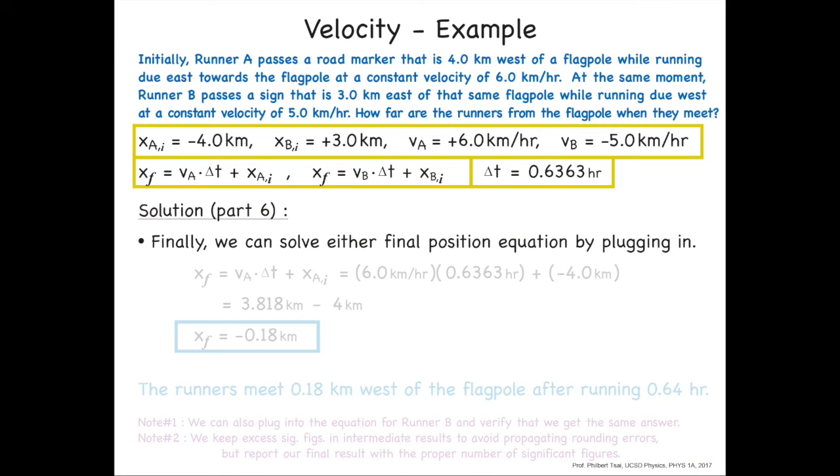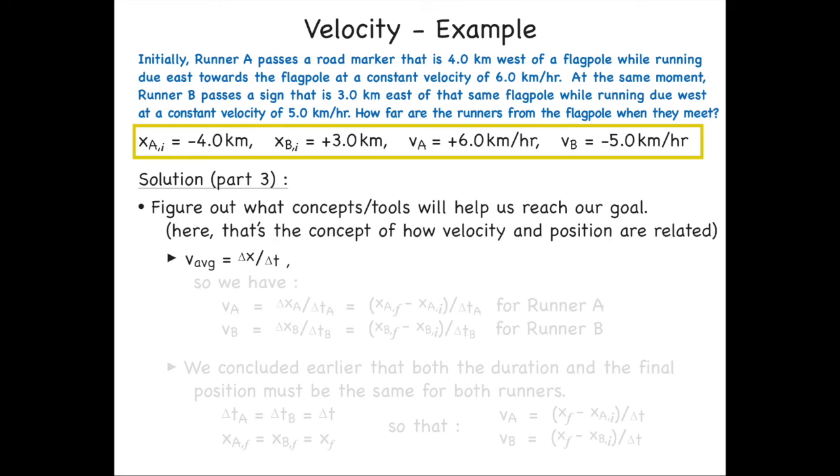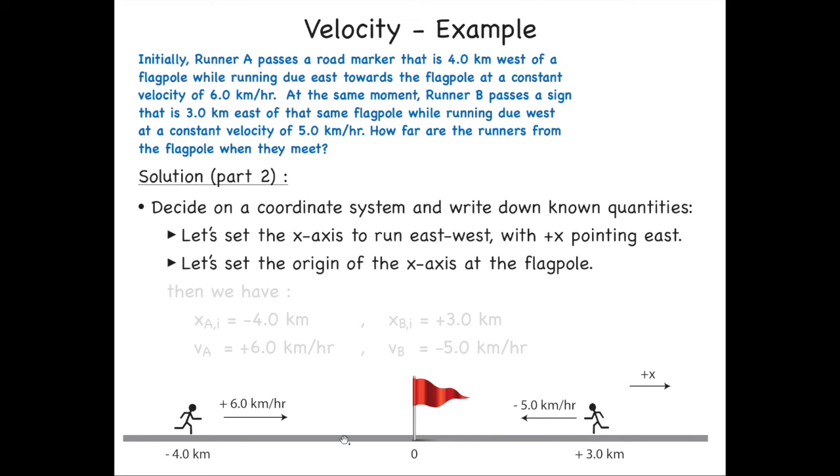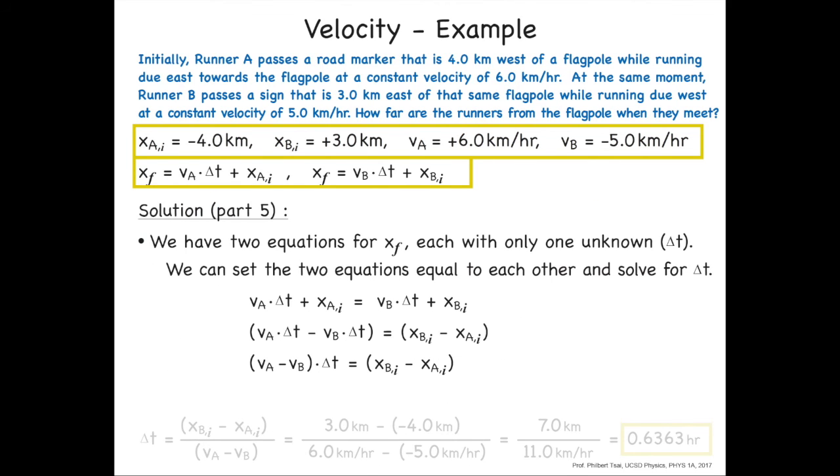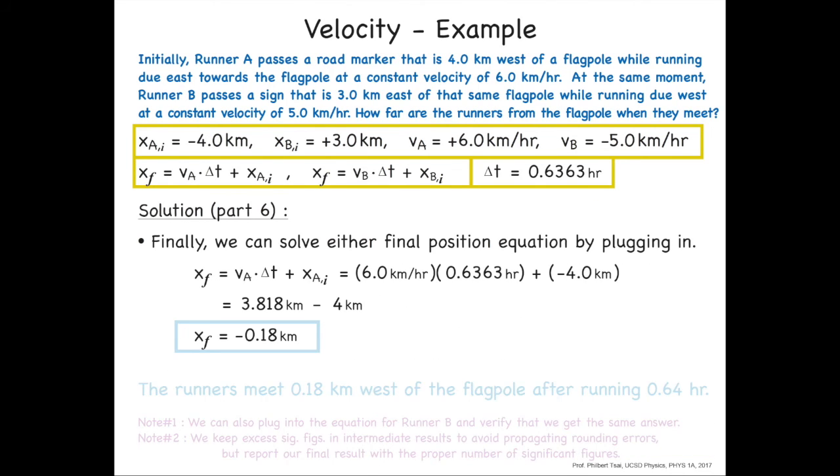Now we know how long they're running for before they meet. And we said if we know the time, we had an equation where this was known, this was known, we just needed this. We've just solved for that. So for either one of these runners, we plug in, we choose runner A. The velocity of runner A times the time we just solved for plus their initial position gives us 3.818 minus 4, which puts our final position at minus 0.18. If we go back and look at the diagram, negative would mean it's to the west of the flagpole. So the final position is some negative number over here. That negative number turned out to be minus 0.18 kilometers west of the flag.